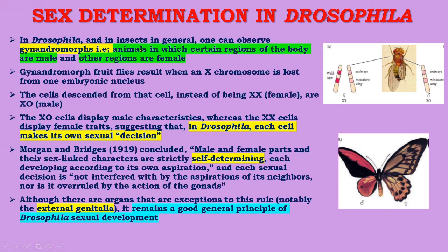In Drosophila and insects in general, one can observe gynandromorphs — animals in which certain regions of the body are male and other regions are female. Gynandromorph fruit flies result when an X chromosome is lost from one embryonic nucleus. Cells descended from that cell, instead of being double-X female, are XO male. The XO cells display male characteristics whereas double-X cells display female traits, suggesting that in Drosophila each cell makes its own sexual decision.